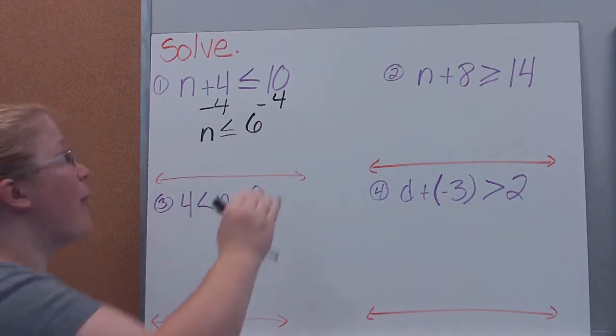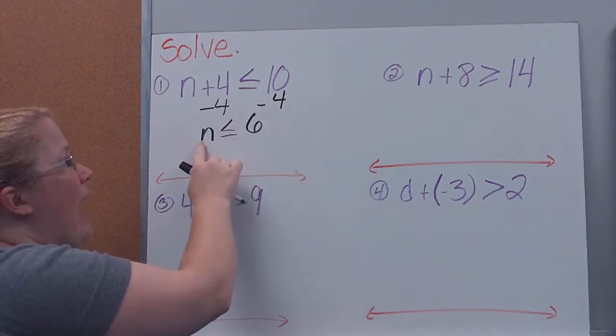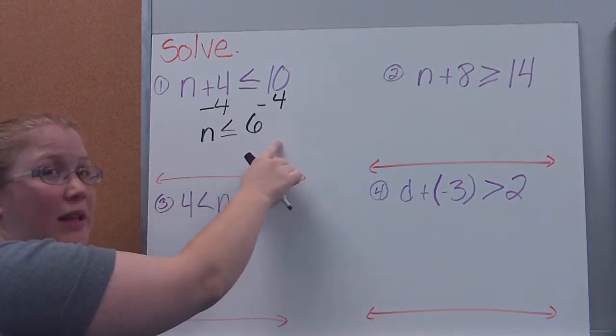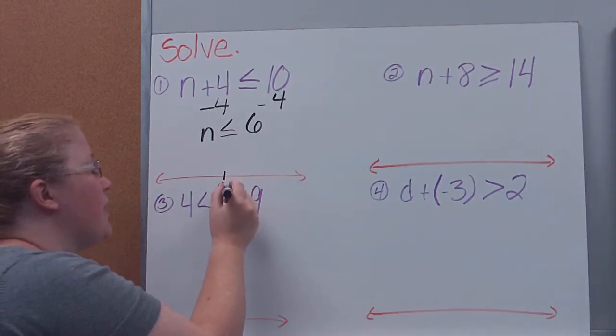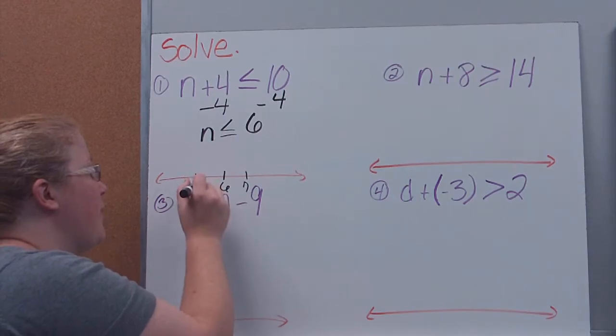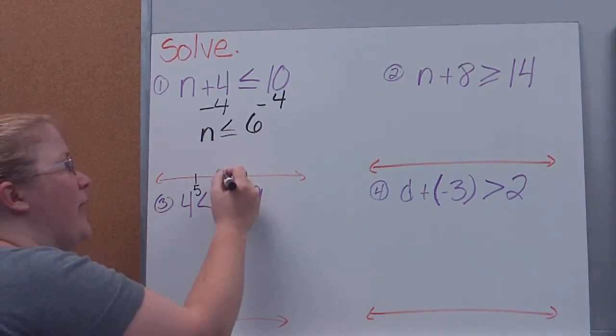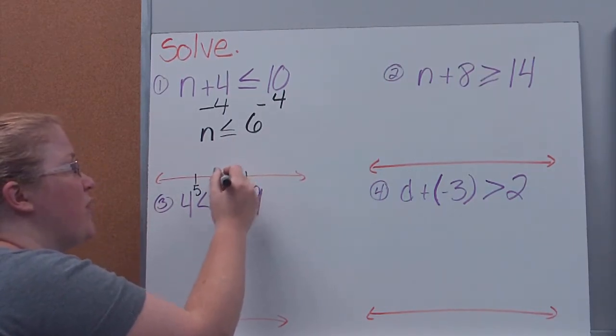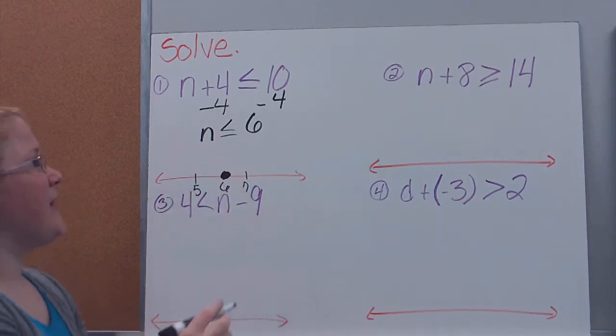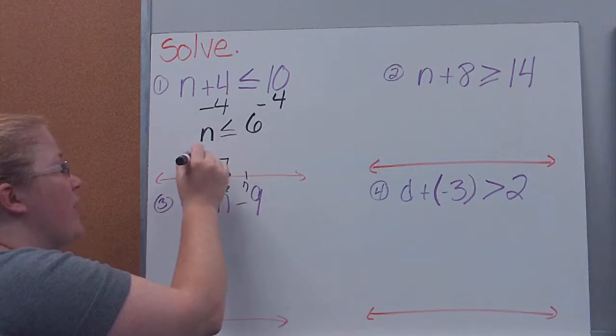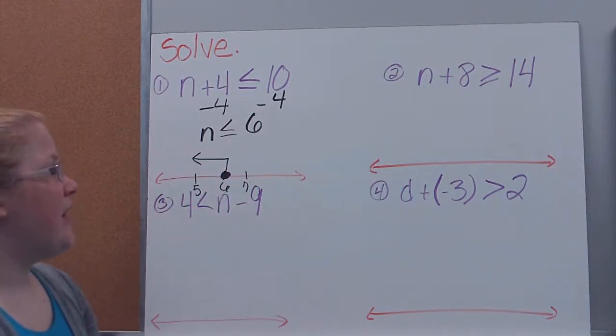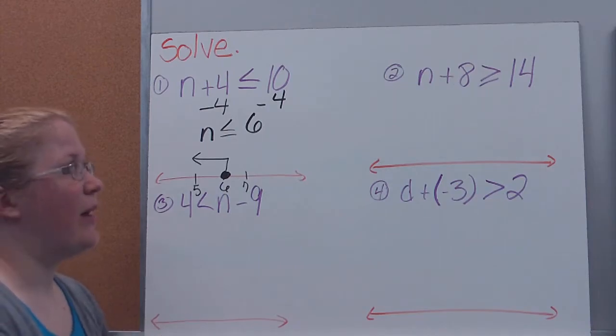So this, whenever we're graphing, remember, you can't graph this up here. We have to solve it into a simple inequality like this before we can graph it. This tells me what number to mark. I'm going to mark 6. It can be equal to 6, so I'm going to use a closed circle. And n is less than, and the variable is on the left, which means this shows me the way my arrow is going to go. Anything less than 6, which are numbers going that way.